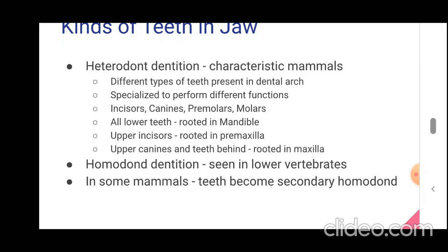Homodont dentition, seen in lower vertebrates, means the same or similar type of teeth with no different types present in the mouth. Sometimes certain mammals show a secondary homodont condition.